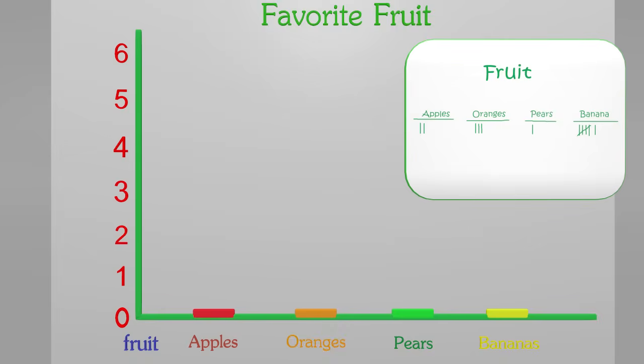We can now fill out the graph according to our data. First in our data are the apples. We can see from the tally marks that two of my friends liked apples. So here on the graph, we will have this bar at the bottom go up two spots to show that two people liked apples.